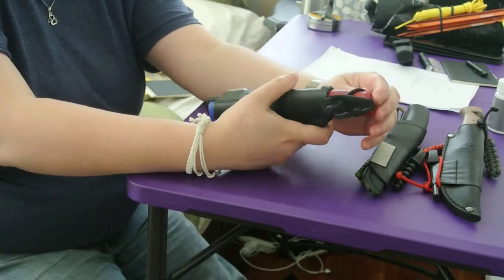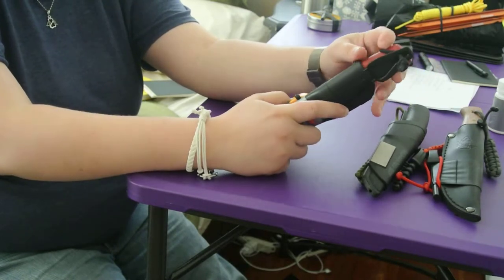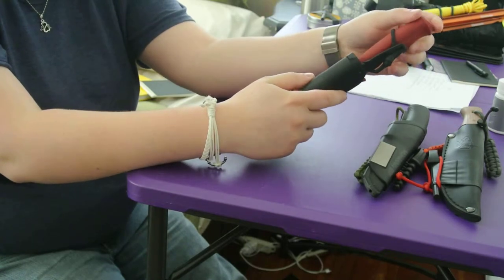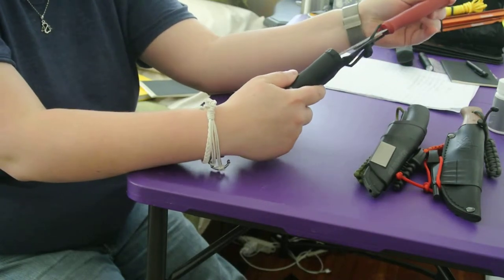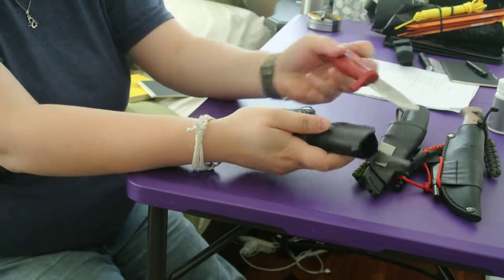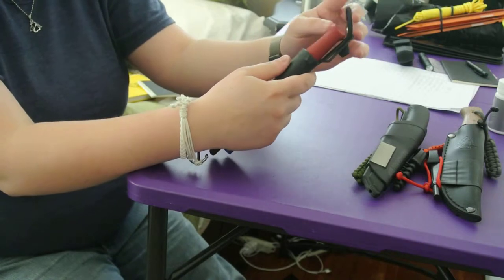I also added a little paracord knot here so I can clip this to my bag if I want to, and I can pull this down and it'll secure the knife. It's not going to come all the way out. This is the sheath that came with it and I just modified it to fit what I wanted.